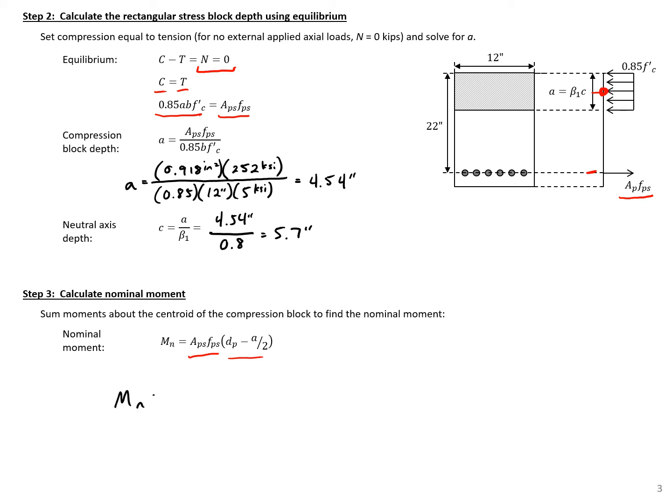we get M sub n equals 0.918 square inches times 252 ksi times (22 inches minus 4.54 divided by 2), giving us a nominal moment of 4,565 kip-inches. This is our nominal moment, compression block depth, and neutral axis depth.